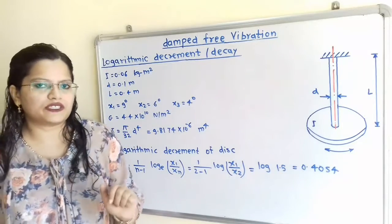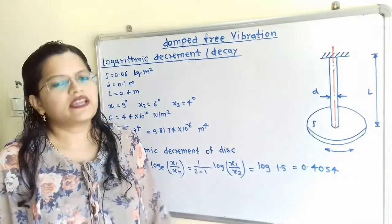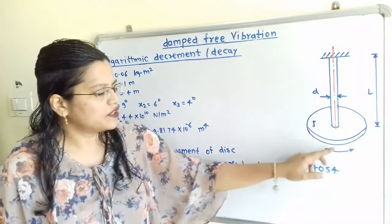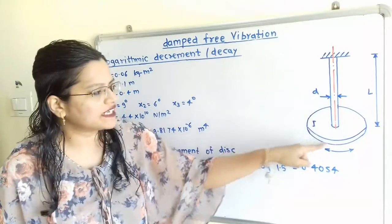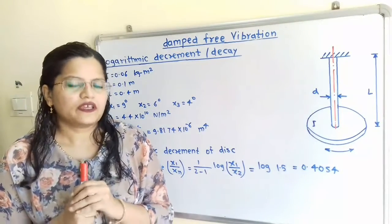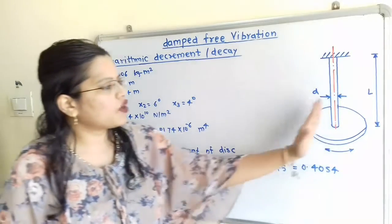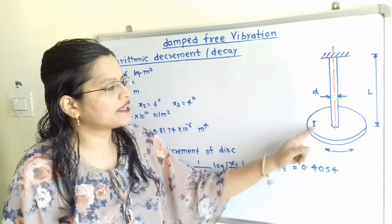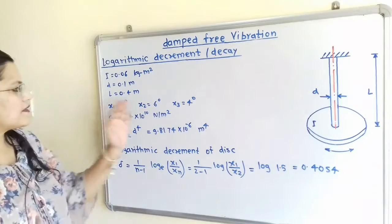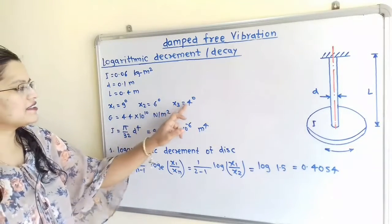What is happening during the torsional vibration? We consider the rest position as the mean position of this disc-shaft arrangement. After the initial displacement is given, this disc vibrates on both sides about this axis — in the anticlockwise direction and in the clockwise direction. The amplitude of vibration on the same side of the mean position is given — either clockwise or anticlockwise. So we take the numbers as x₁, x₂, x₃ for successive amplitudes on the same side: x₁ = 9°, x₂ = 6°, x₃ = 4°.